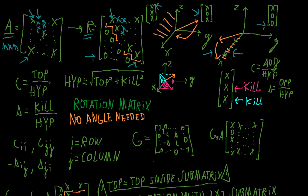We cannot visualize that in more than three dimensions, but you do the same thing — just rotations that you apply to the column vectors of your matrix. To find the Givens matrix, we need to find our cosine and sine, defined by the letters c and s. Cosine is defined by the top element of the vector — the element you want to keep — over the hypotenuse. Sine is defined as the element you want to eliminate over the hypotenuse. The hypotenuse is the square root of the top element squared plus the kill element squared.